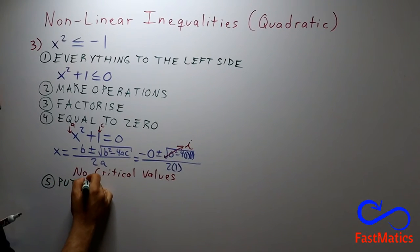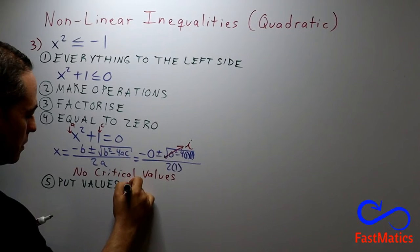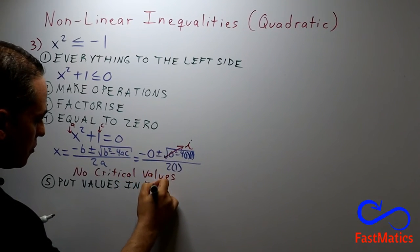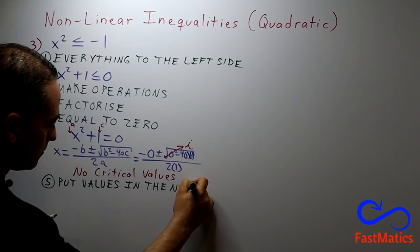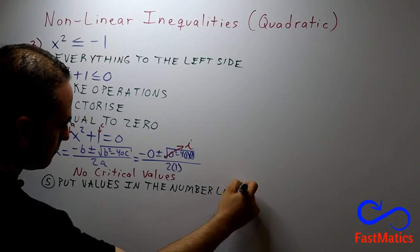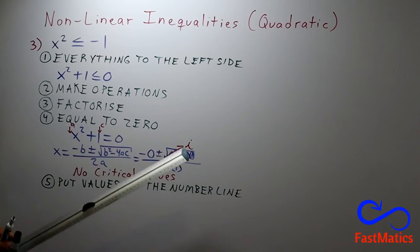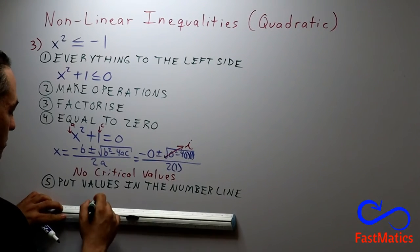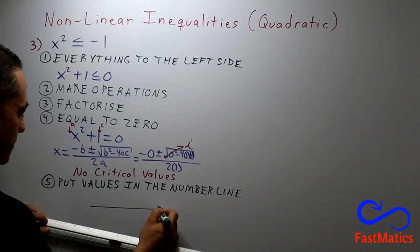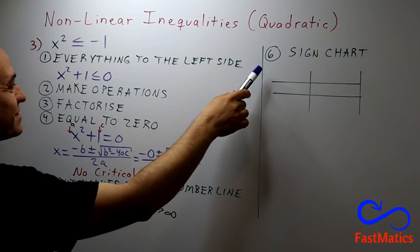Put values in the number line. But, we do not have critical values. So, we are going to draw a number line without values. Only with infinite and negative infinite. So, step 6.